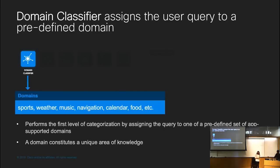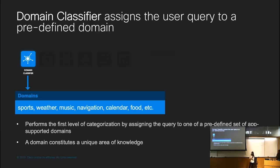The first component of the natural language processing pipeline is the domain classifier. A domain is a broad area of unique knowledge or vocabulary — for example, sports is a domain, weather is a domain, music is a domain. The domain classifier uses features from the language of the query to classify an example into one of your predefined domains.